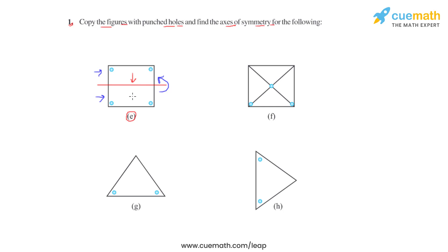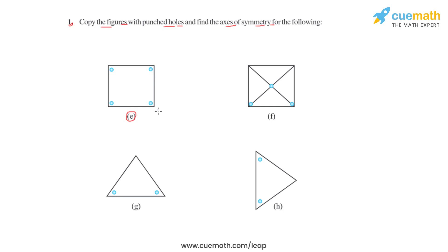Based on the orientation of the punched holes, let us see if we can have even more axes of symmetry for figure E. Drawing a line joining two opposite vertices also divides the figure into two equal halves, and folding about this diagonal line again makes both halves coincide — making this line another axis of symmetry. Similarly, joining the other pair of opposite vertices with a line also divides the figure into two equal halves, and folding about this line makes both halves coincide, giving us a fourth axis of symmetry.